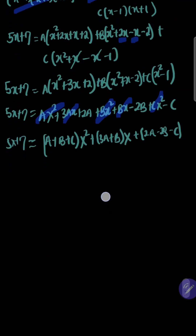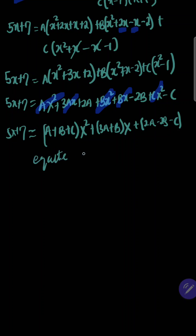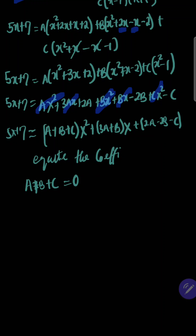And on the left-hand side we still have 5x plus 7. The next thing for us to do is to equate the coefficients. By equating the coefficients, you can see that x² does not have any corresponding coefficient on the left-hand side, so A plus B plus C equals 0. The coefficient of x gives us 3A plus B equals 5. And lastly, 2A minus 2B minus C equals 7.